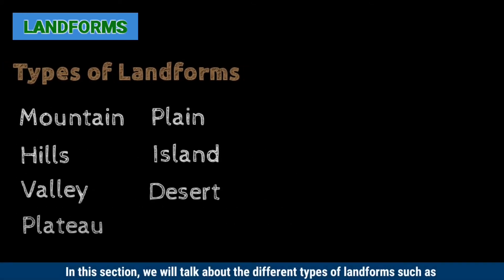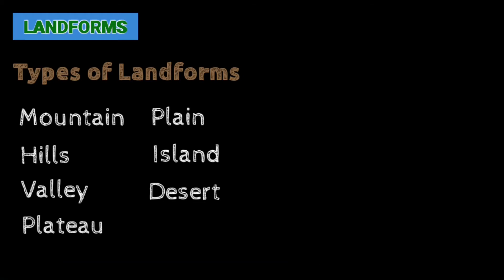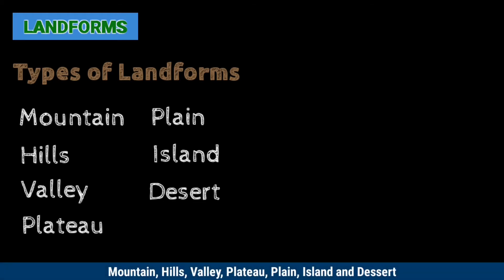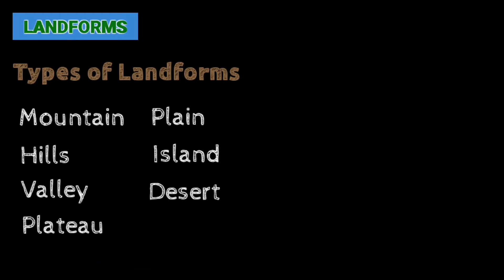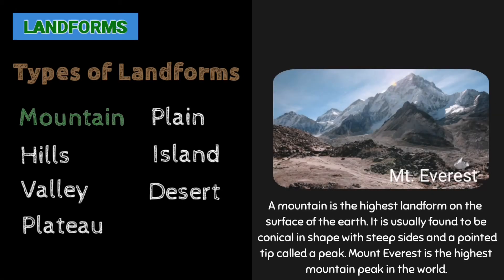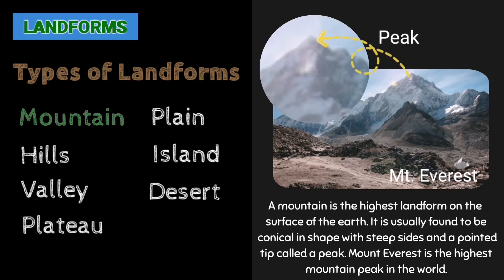The types of landforms. In this section, we will talk about the different types of landforms such as mountain, hills, valley, plateau, plain, island, and desert. A mountain is the highest landform on the surface of the Earth. It is usually conical-shaped with steep sides and a pointed tip called a peak. Mount Everest is the highest mountain peak in the world.